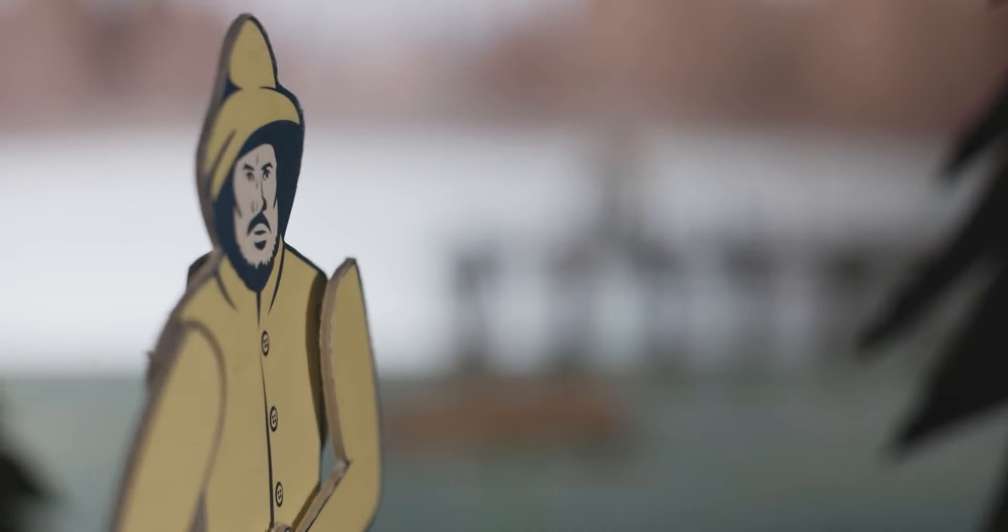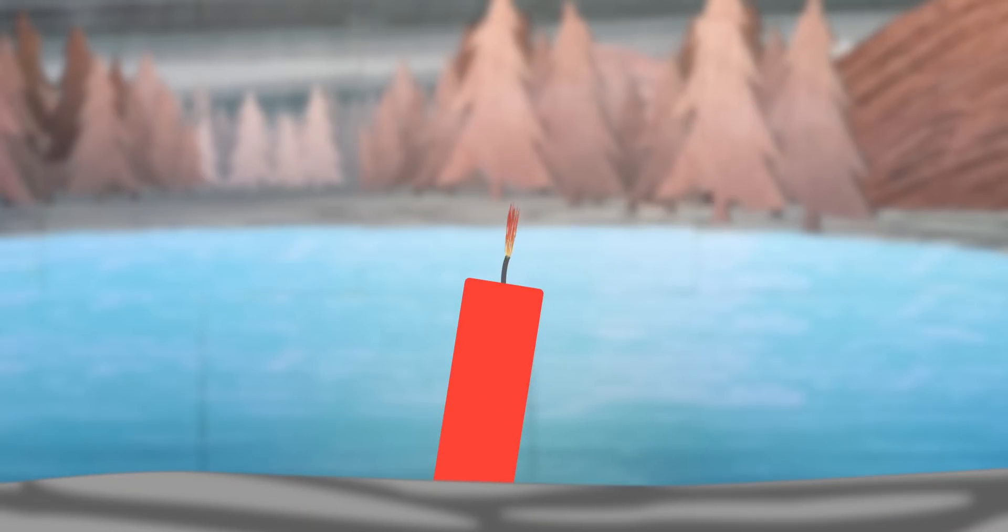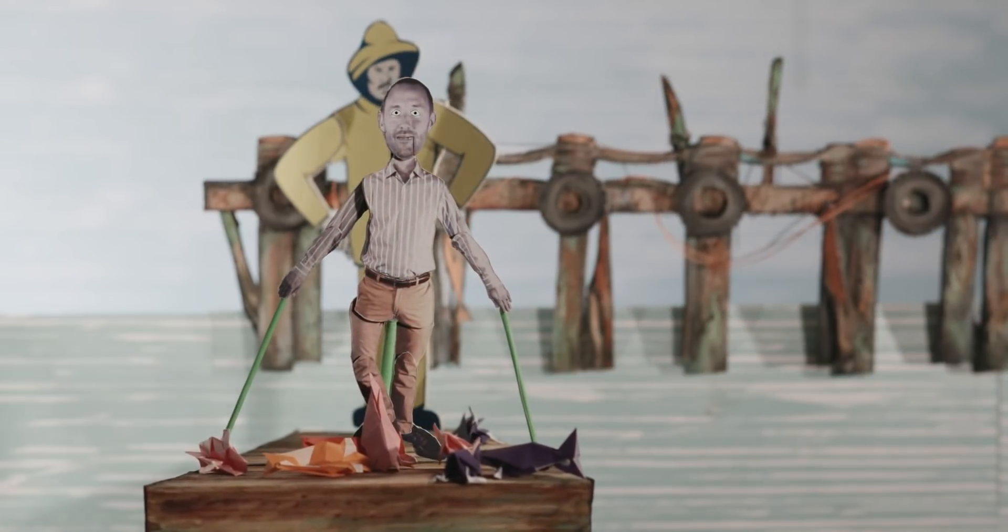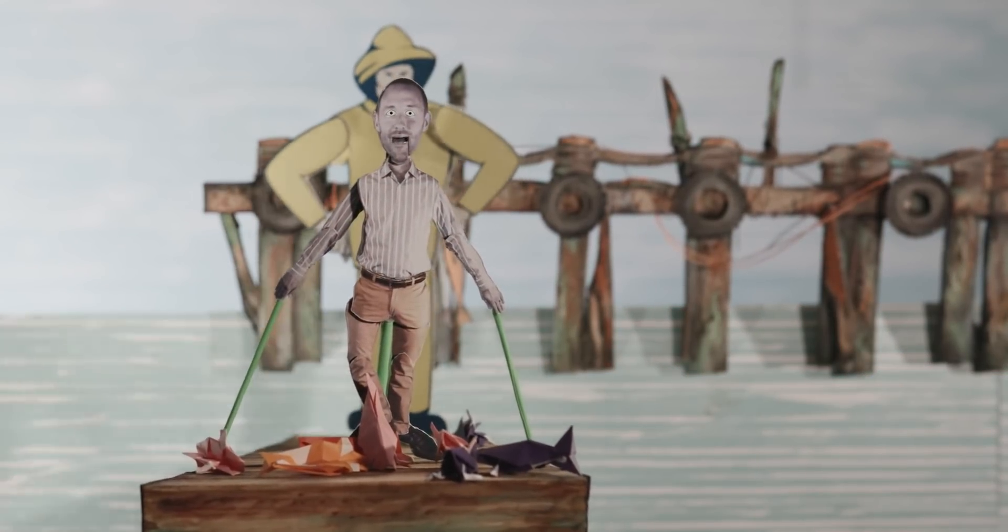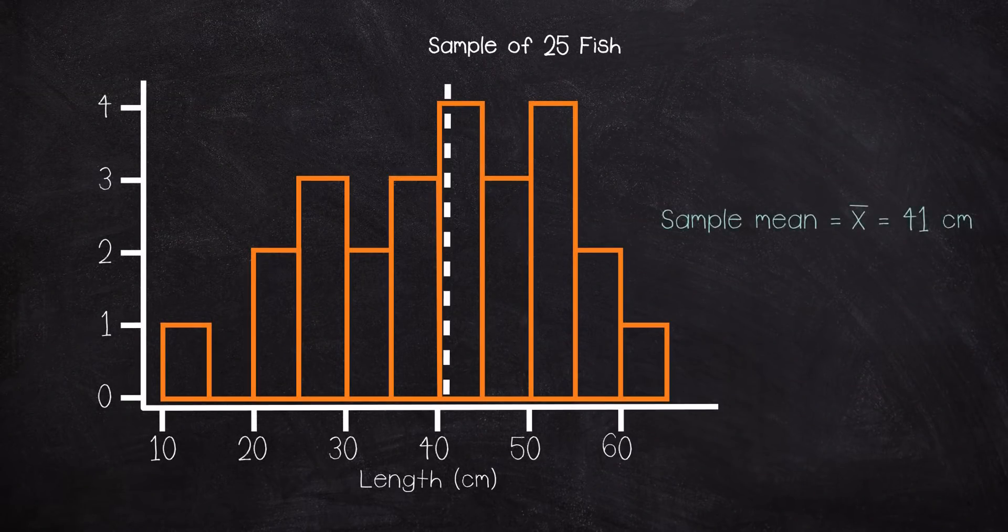Suppose you are interested in estimating the mean length of fish in this lake, and you only have this lousy, lazy, paper cutout of a fisherman to help you. Let's try something different to take a random sample of 25 fish from this lake. For these 25 fish, you find they have a sample mean length of 41 centimeters and a sample standard deviation of 12 centimeters.